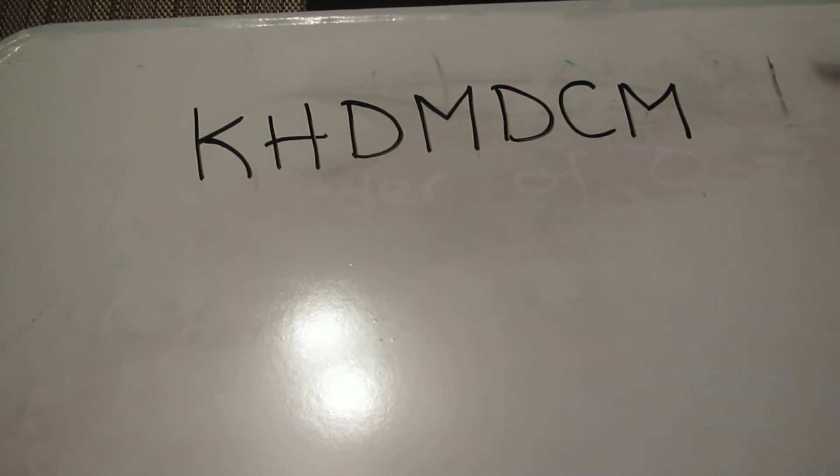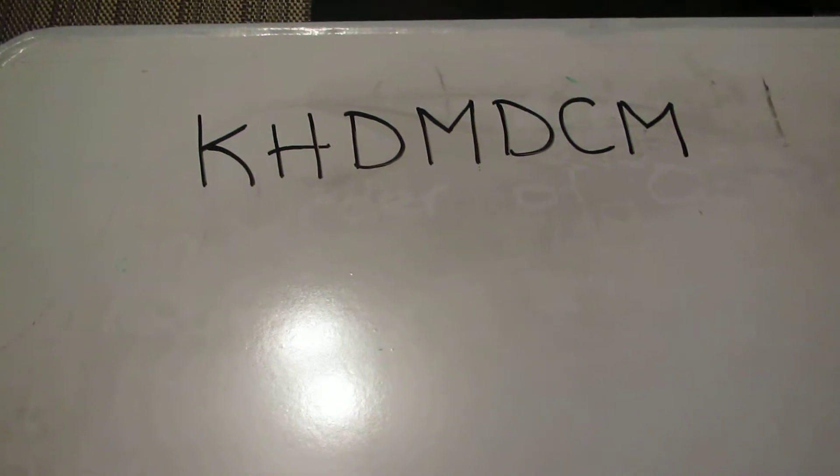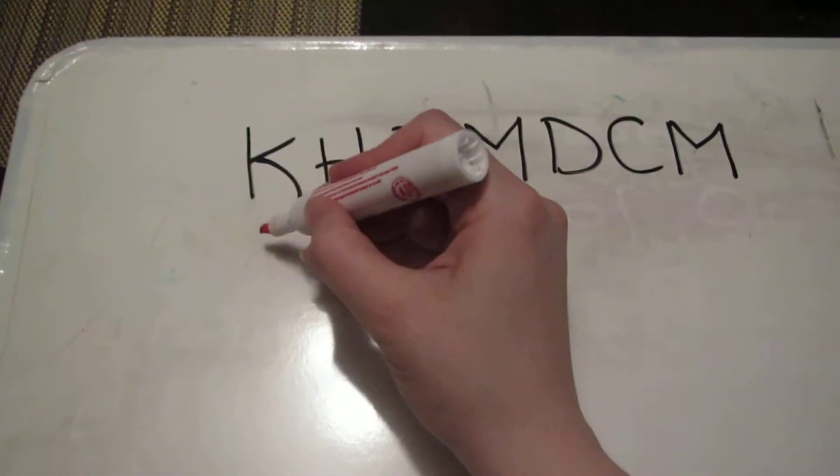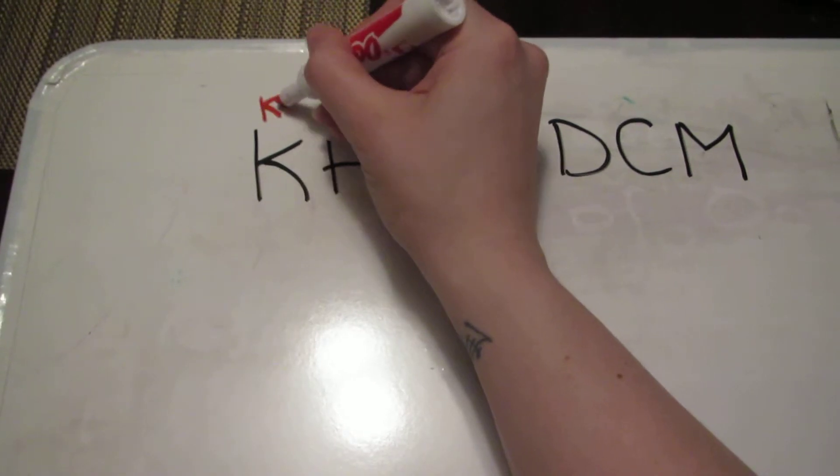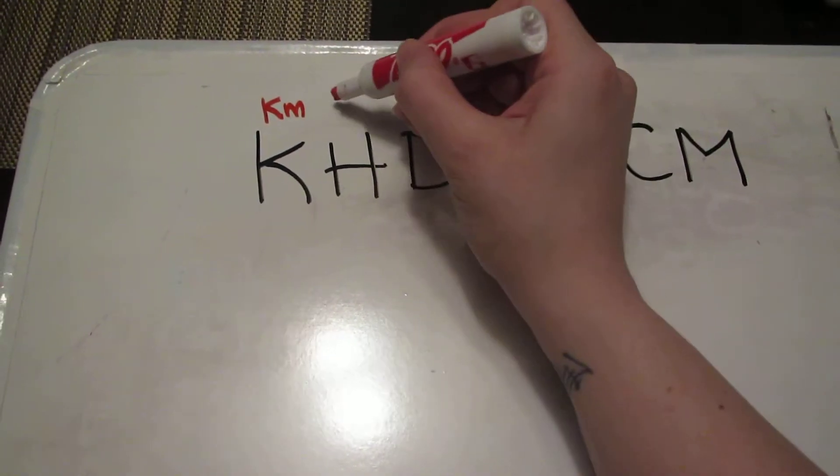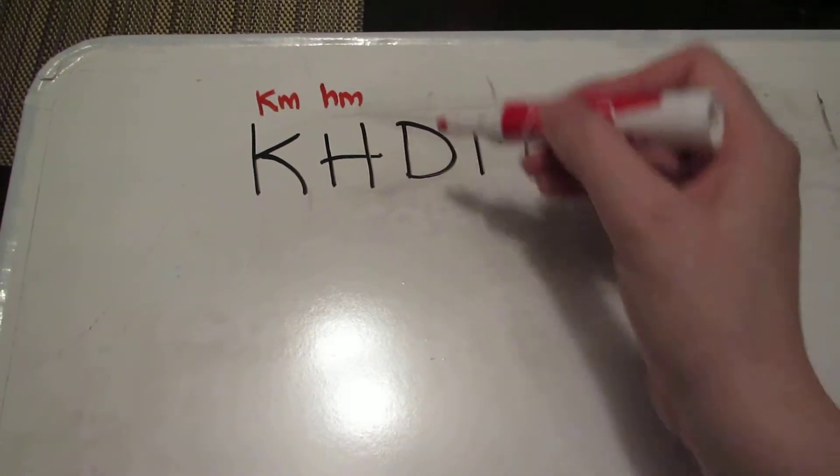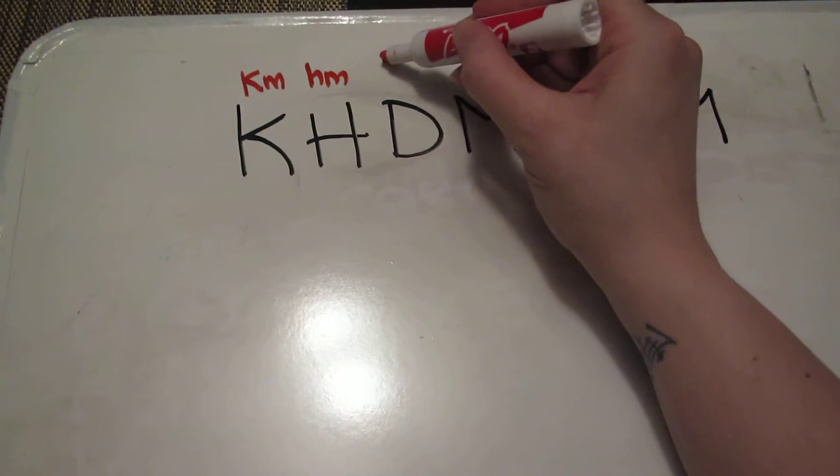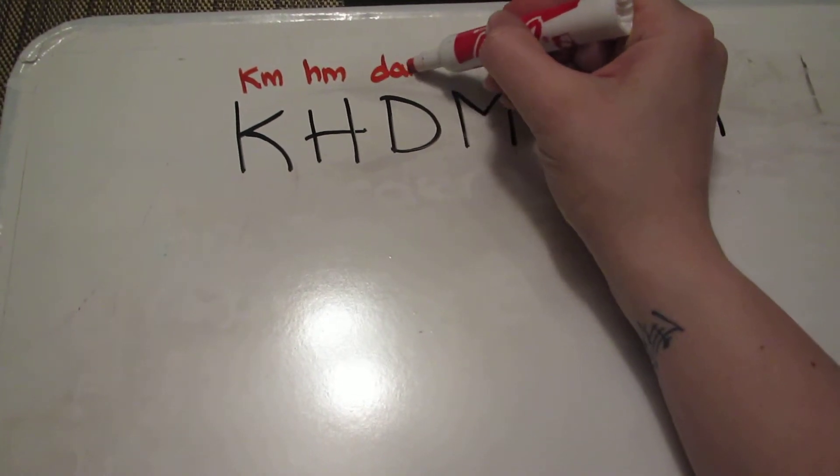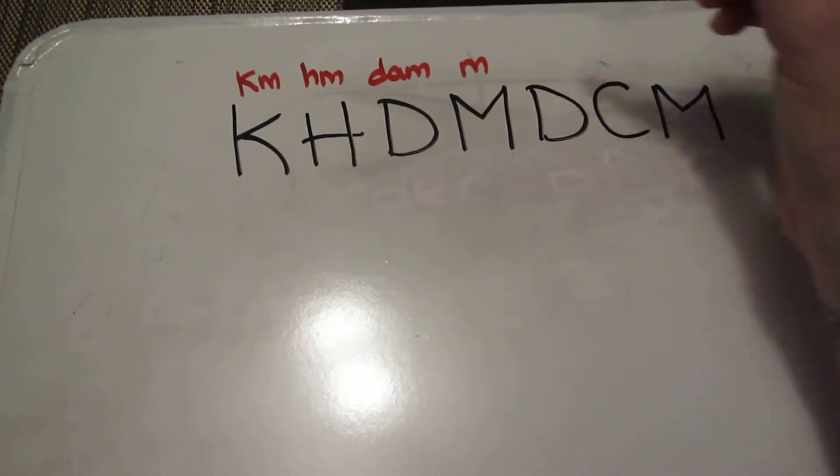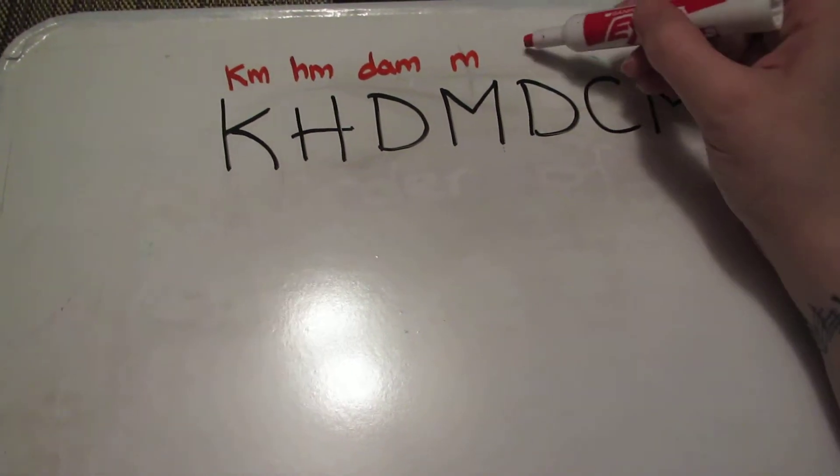First, our K, ketchup, stands for kilometers. H stands for hectometers, which we don't use very much. D is decameters, M is meters, the other D is decimeters.